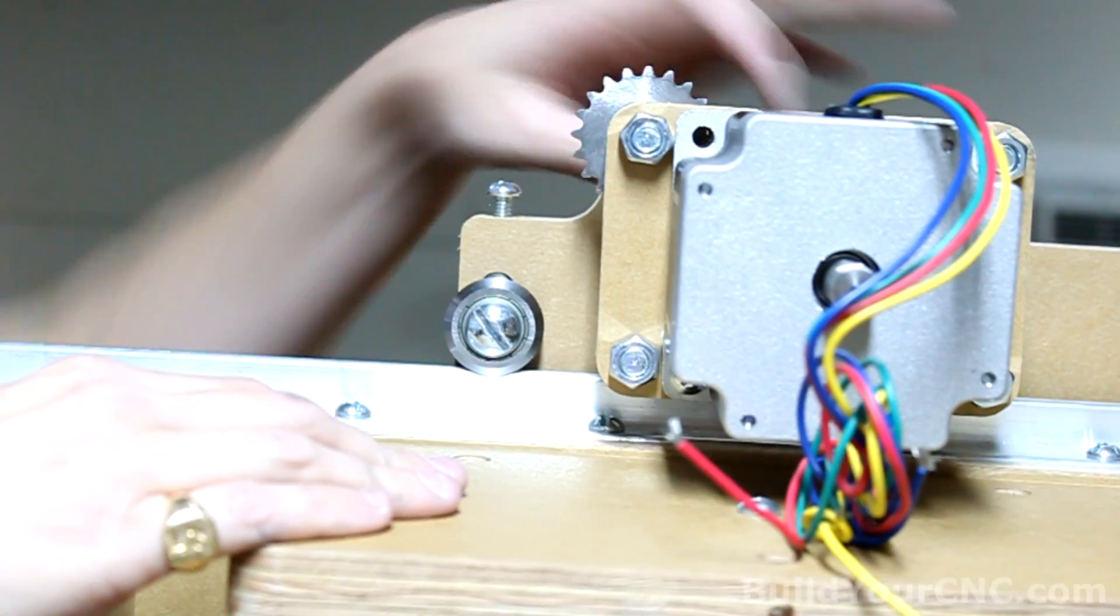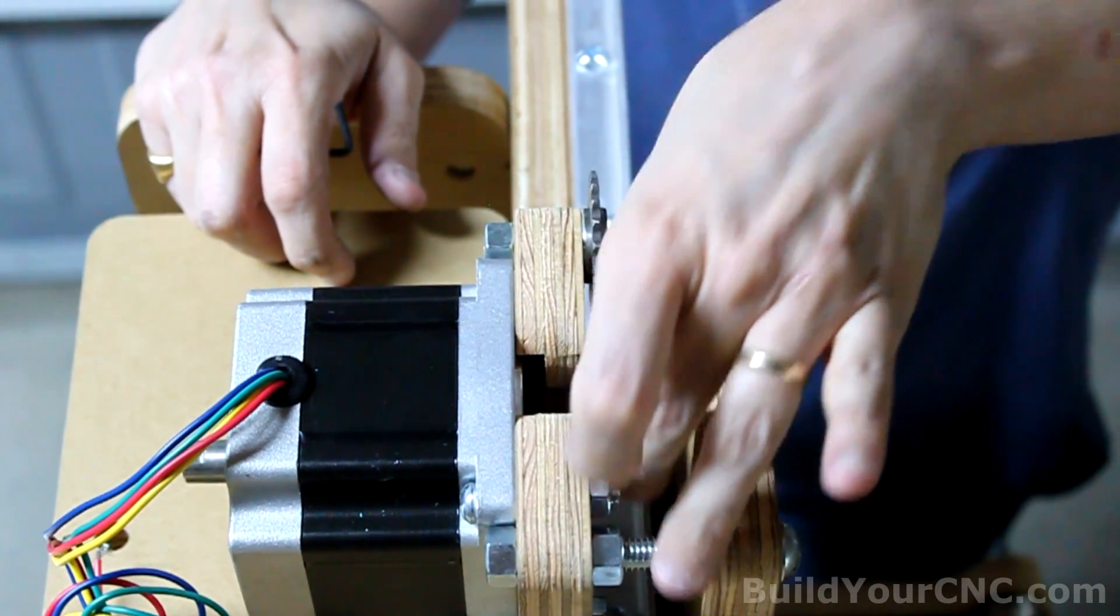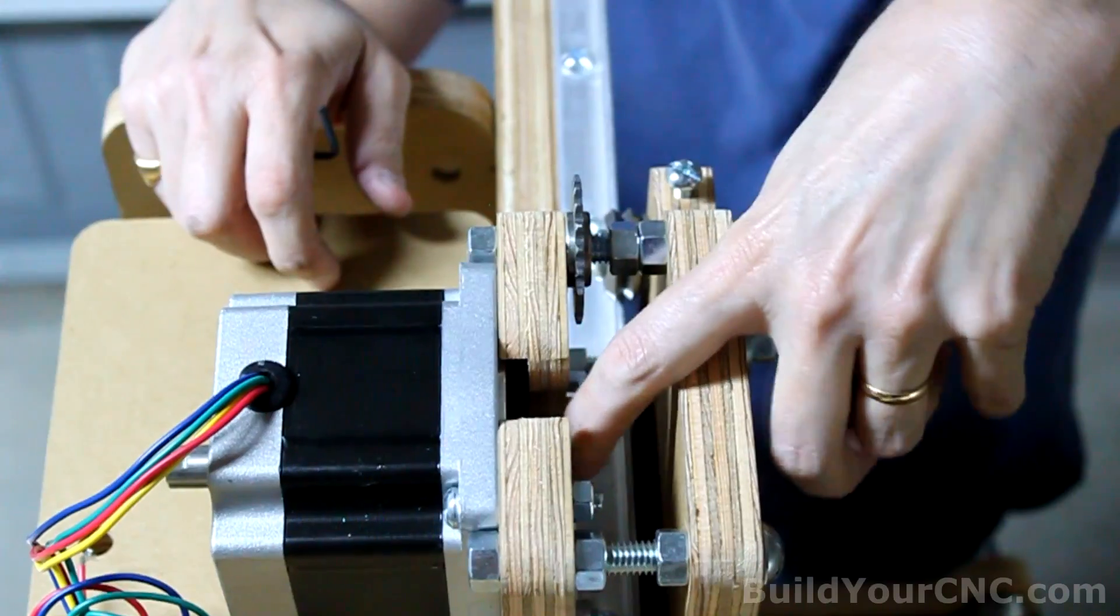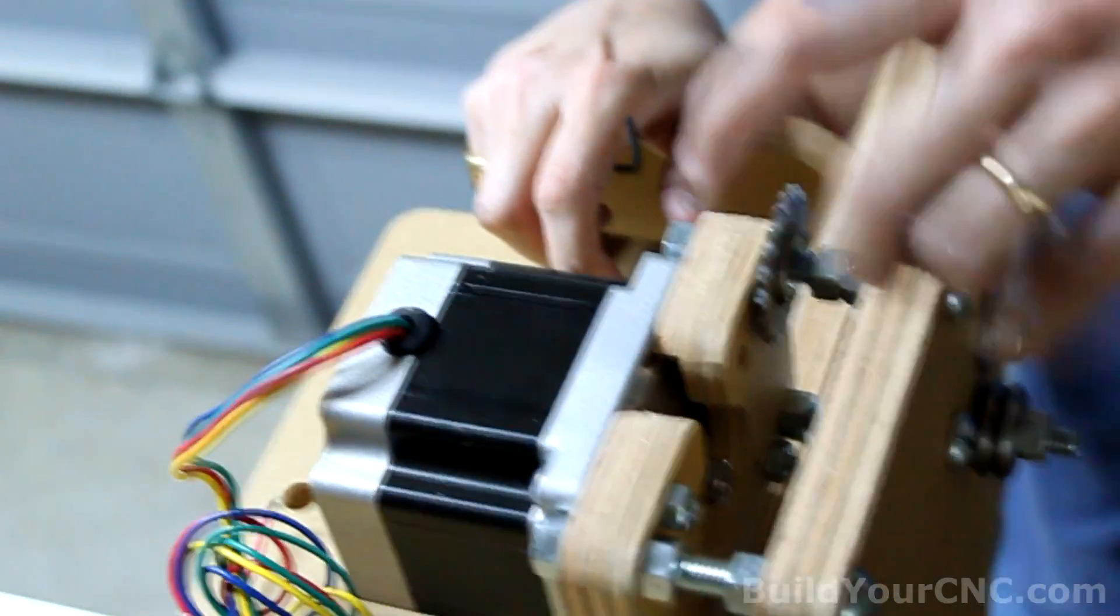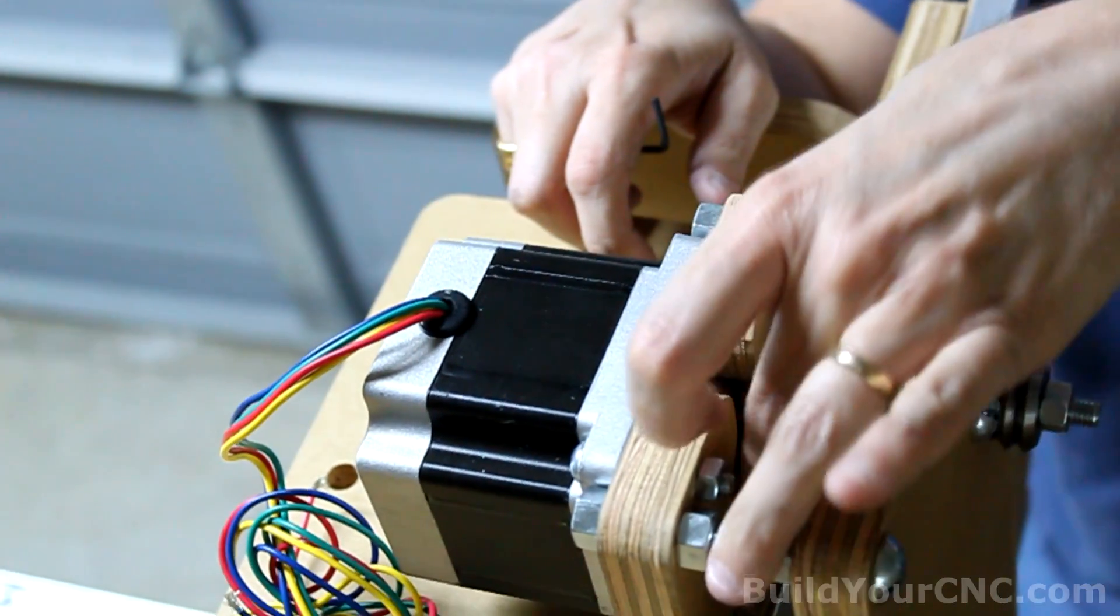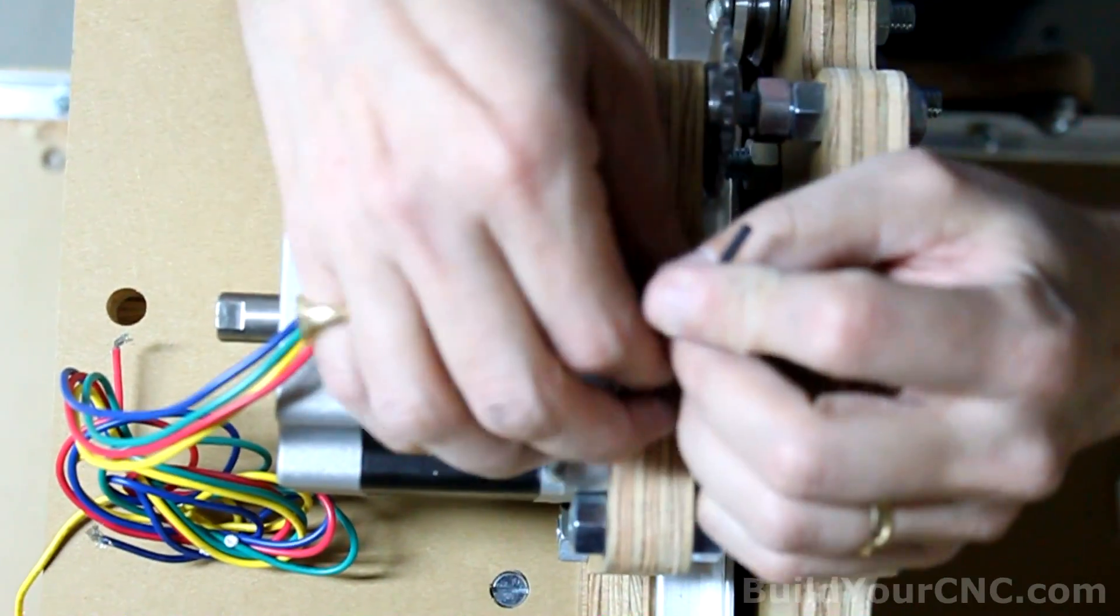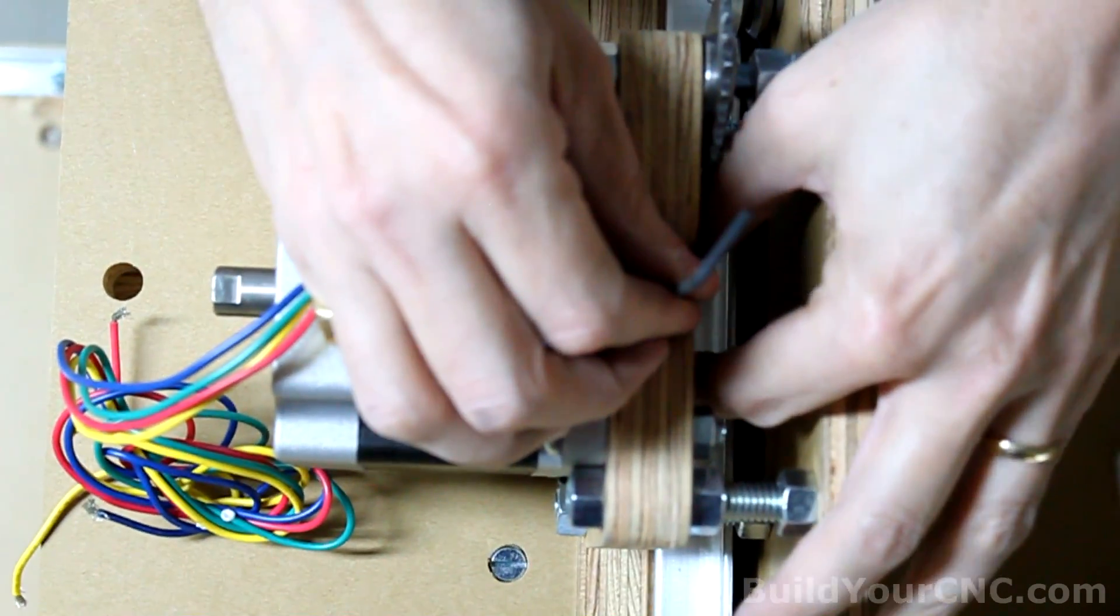Now we need to put on the drive sprocket. The drive sprocket is just going to go over the half-inch shaft motor. And you'll notice that there's a flat in the motor. You can use that to put one of the set screws against. And try your best to align it with the idler sprocket as you're doing this.